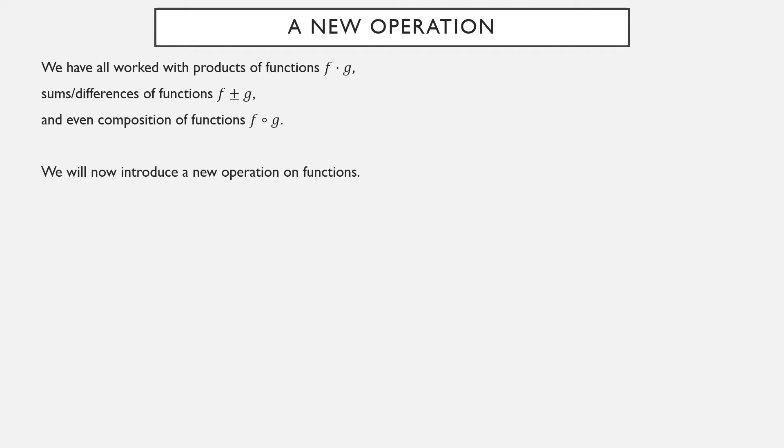We're now going to introduce a new operation. If f and g are two arithmetic functions, so functions whose domain is the positive integers and whose co-domain is either real numbers or integers, then the Dirichlet convolution is a new arithmetic function given by this formula here. We use this star. This is different from multiplication and it's different from function composition.